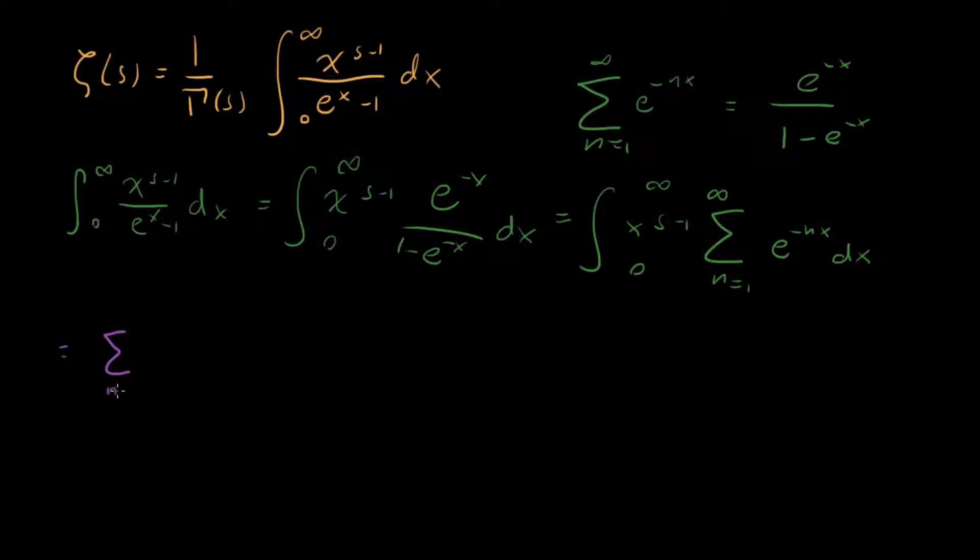And so if we do that, then we have our sum from n equals 1 to infinity, and then we have everything else as it was. We have our integral x to the s minus 1, e to the minus nx dx. Aha! But this is starting to look a little bit like our gamma function, right? We have our x to the s minus 1, and then we have this e to the minus nx. So almost there, we have this pesky n out in front.